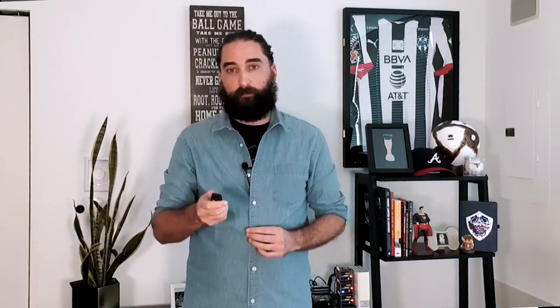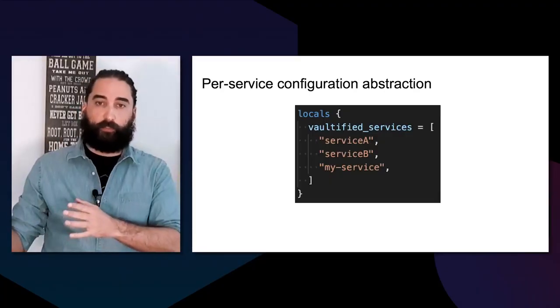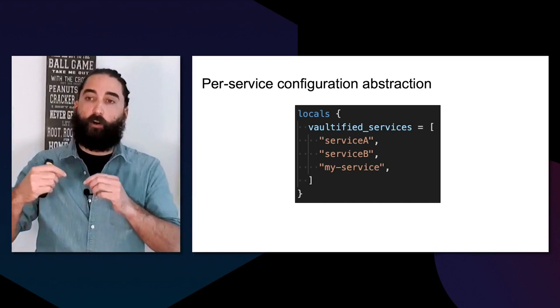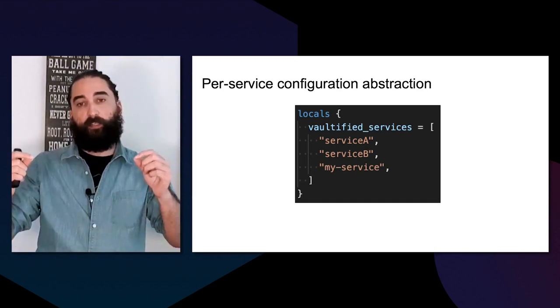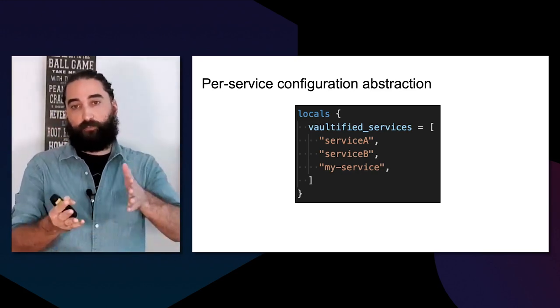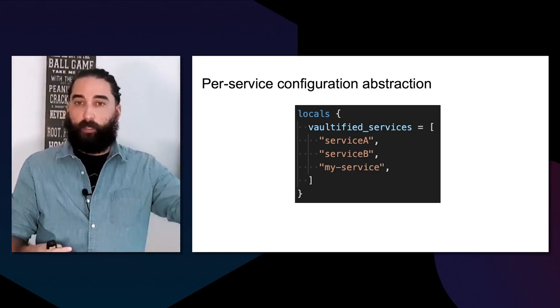The Vault configuration was split into two parts, and we were maintaining this with Terraform. One was the Vault cluster itself — the cloud resources forming the cluster — as well as the backend configurations like roles, policies, and options. The static secrets were managed separately. We had abstracted out the per-service configuration so that for any new service needing Vault authentication, the service owner just needed to add a single line to a list. That list was passed to a Terraform module that would create everything that service required: policy, permissions, roles, etc.